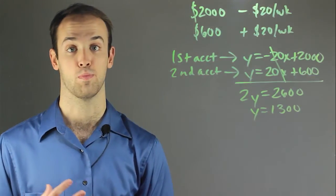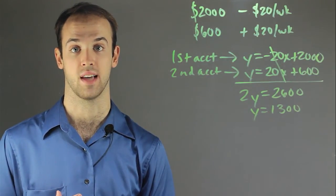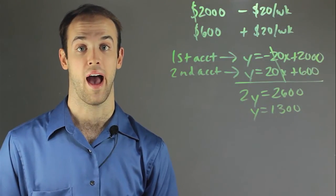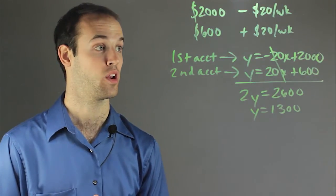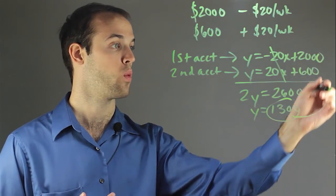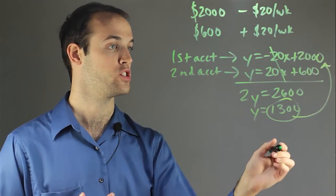So I know how much money that they're going to have when they coincide. They're going to have $1,300 each but I want to know after how much time. In a sense I want to know the x value. So all I do is plug this value in for y into either equation. I'll use the first one.